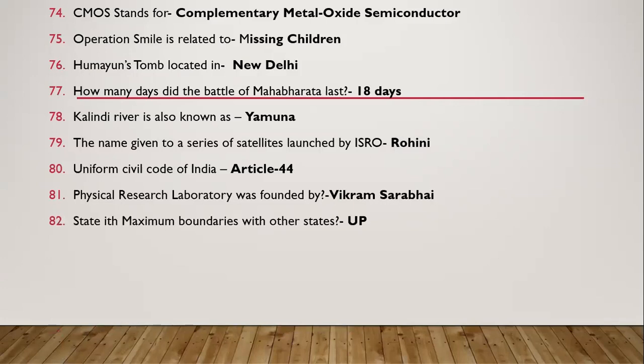Question 82: State with the maximum boundaries shared with other states — it is Uttar Pradesh. Question 83: G20 Summit will be held in Turkey. Question 84: How many constellations are named? There are 88 constellations.